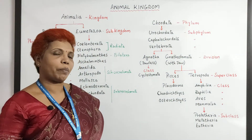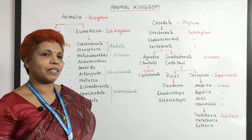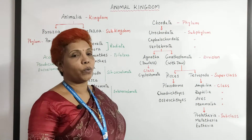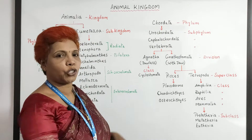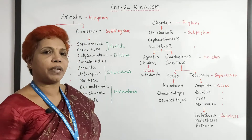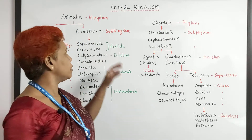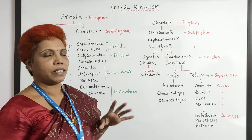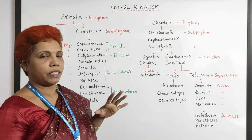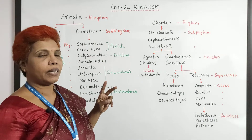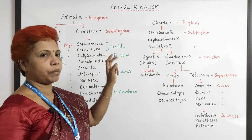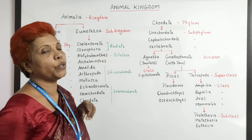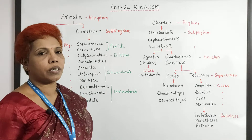Hi, welcome to my biology class. Today let's go with an outline classification of the animal kingdom. This is Animalia. It starts from the kingdom and is divided into two sub-kingdoms: Parazoa and Eumetazoa.